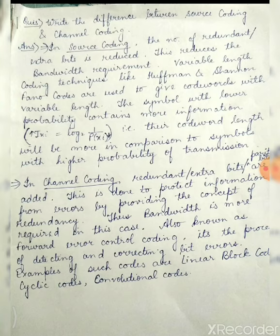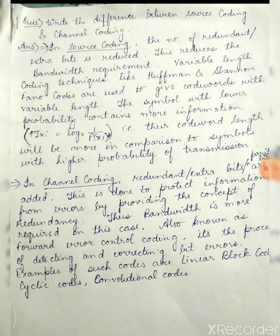Higher the probability of occurrence, lower will be the information content in that symbol, because information is given by I(xi) = log base 2 of (1/P(xi)). That means if the probability of occurrence of any symbol is less, then its information content will be more. So based on the probability criteria, the length of the code words are decided.